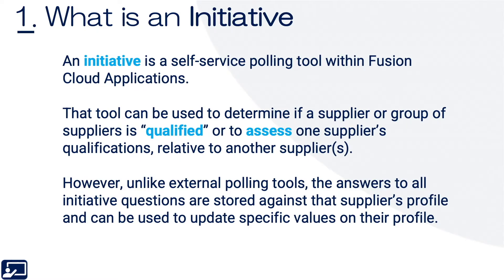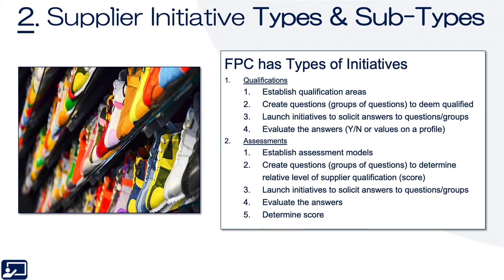It's also worth noting that Oracle refers to the application as supplier qualifications, but the initiative is the tool to ask the questions that ultimately result in a qualification, which is largely a binary yes-no, or an assessment. In Fusion Procurement Cloud, there are two types of initiatives: qualifications and assessments. Qualifications establish qualification areas like insurance, and they may create groups of questions — general insurance, performance bond, DOE, and so on. They launch these initiatives to solicit answers to those questions in self-service, evaluate the answers as yes or no, and the results get stored in what we call containers. The container could be generic — just a value stored against a profile — or it could feed into a qualification that becomes a business classification, such as supplier diversity.